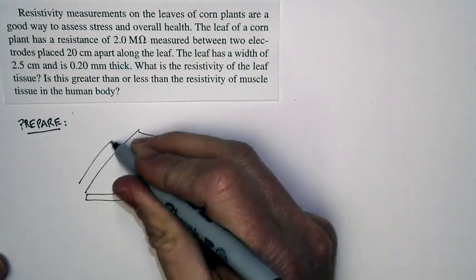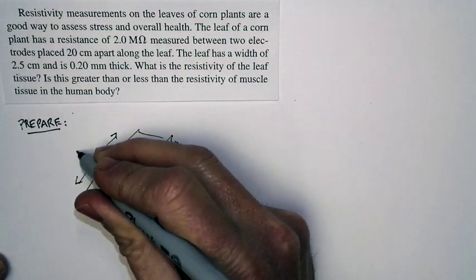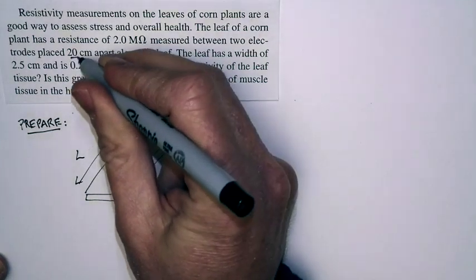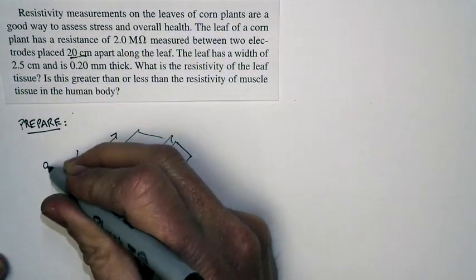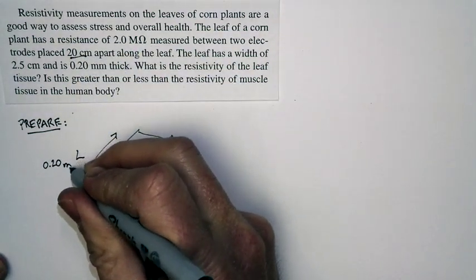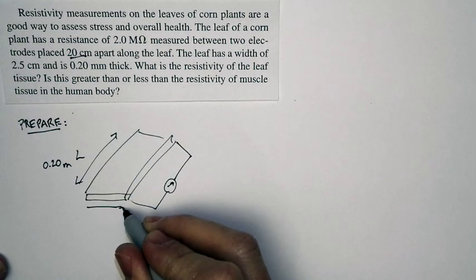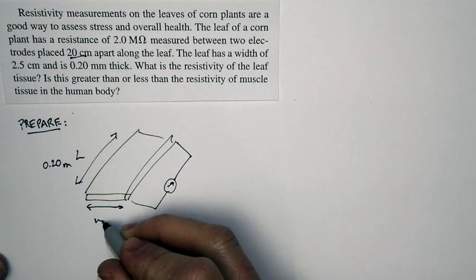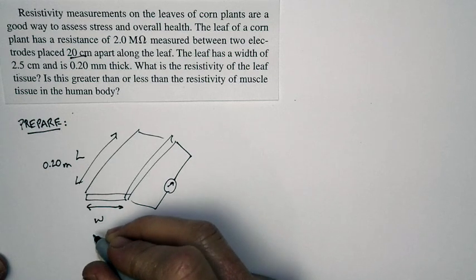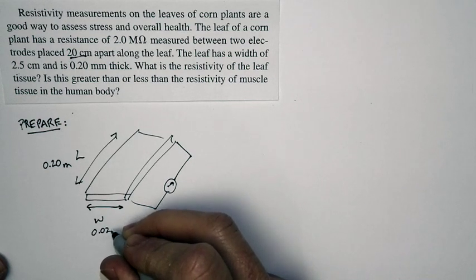So we've taken this chunk of the corn plant and we've hooked up a meter to measure resistance between two separated points. And the length between the electrodes is 20 centimeters. That's 0.20 meters. The width of the leaf at this point is 2.5 centimeters or 0.025 meters.